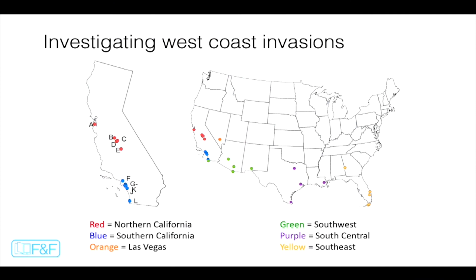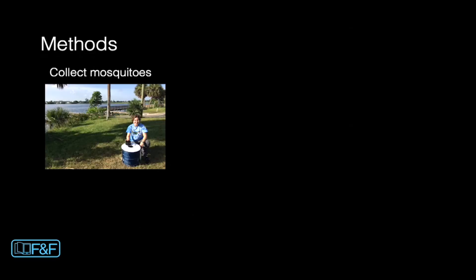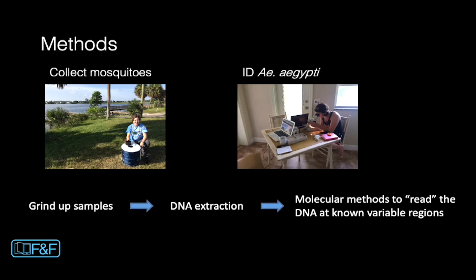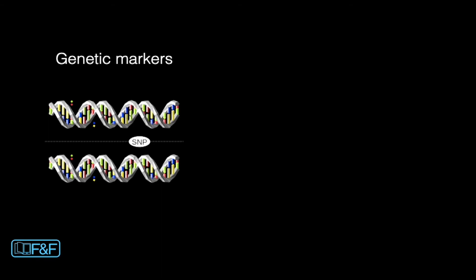The reason we can use DNA is that mosquitoes from different regions have unique genetic fingerprints — you can think of this a little bit like 23andMe, but for mosquitoes. In my study, I used populations from all the places indicated in this map, about 30 to 50 individuals from each. In a couple of cases I went out to the field to collect mosquitoes, but in most cases we have great collaborators who sent us samples. The next step was to identify the Aedes aegypti, then I did a lot of lab work involving grinding up the mosquitoes, extracting their DNA, and using molecular methods to read the DNA in known variable regions, which we call genetic markers.